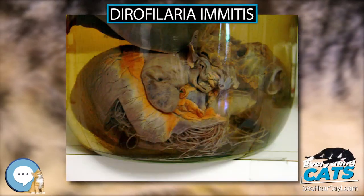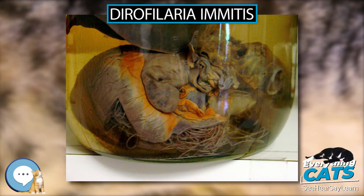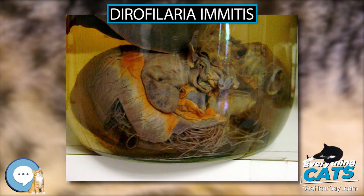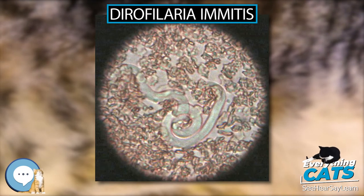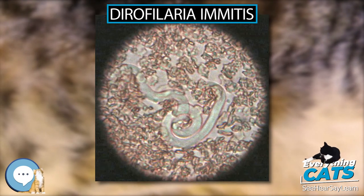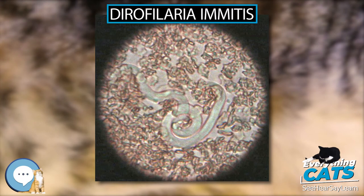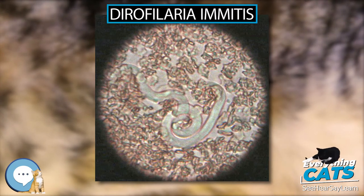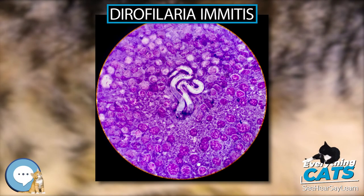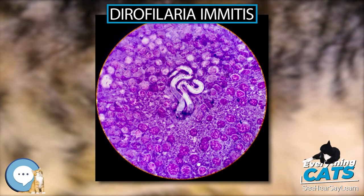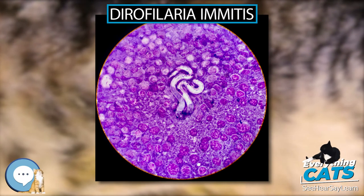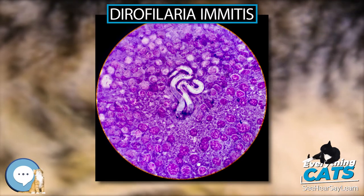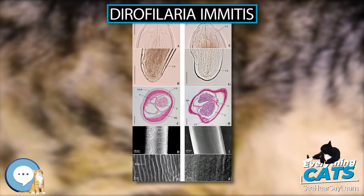Dirofilaria immitis, the heartworm or dog heartworm, is a parasitic roundworm that is a type of filarial worm — a small thread-like worm — that causes dirofilariasis. It is spread from host to host through the bites of mosquitoes.